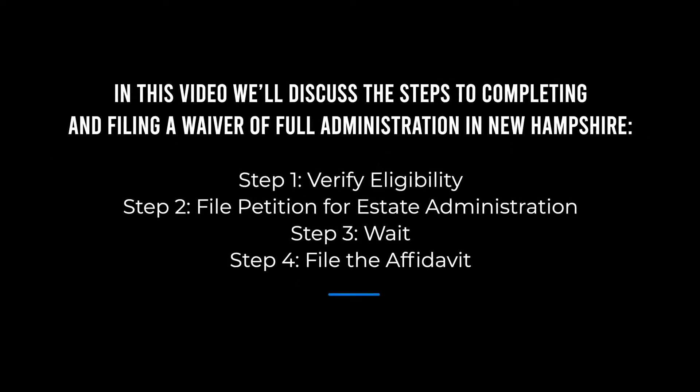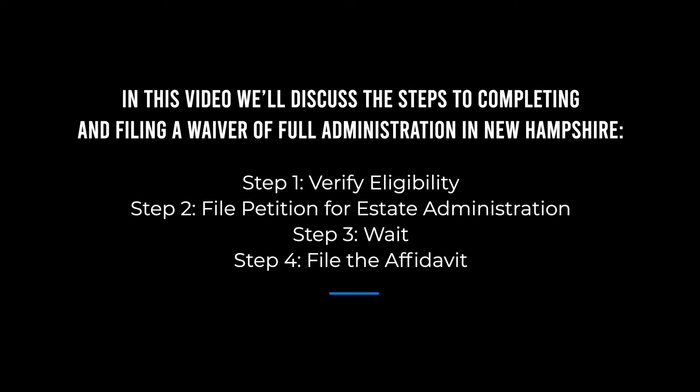In this video, we'll discuss the four steps to completing and filing a waiver of full administration in New Hampshire: Step 1, verify eligibility; Step 2, file petition for estate administration; Step 3, wait; and Step 4, file the affidavit. Make sure to grab your template for a New Hampshire waiver of full administration at the end of this video, and don't forget to subscribe to our channel for more content from eForms, the world's largest database of official legal documents.